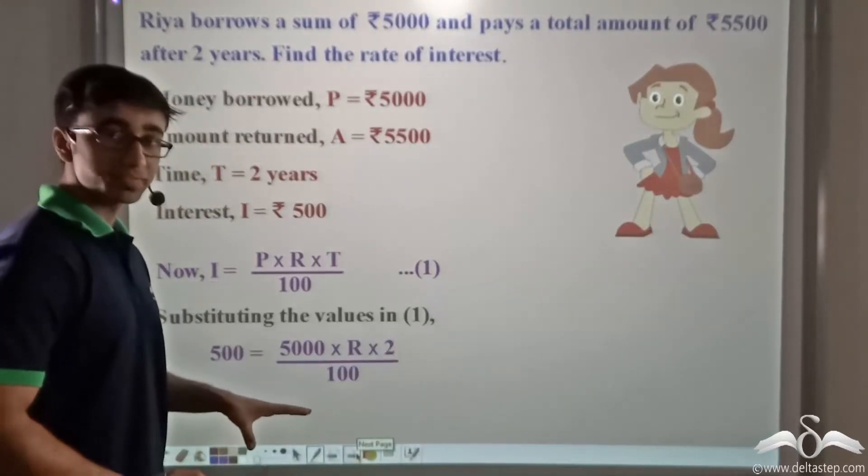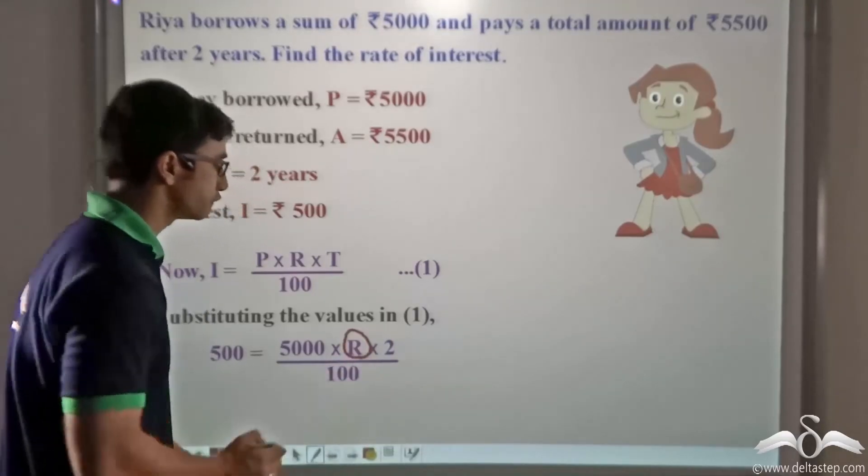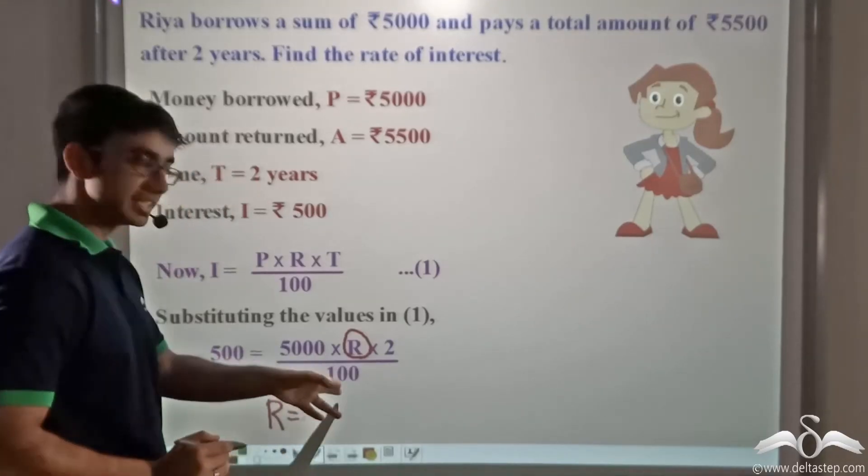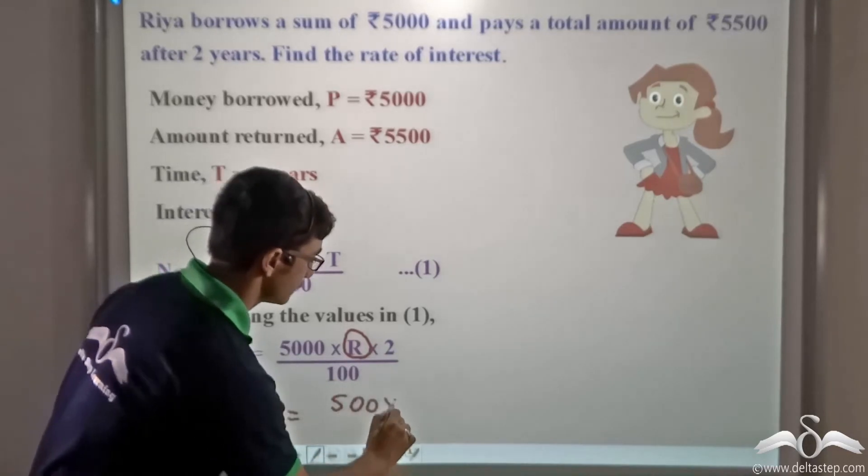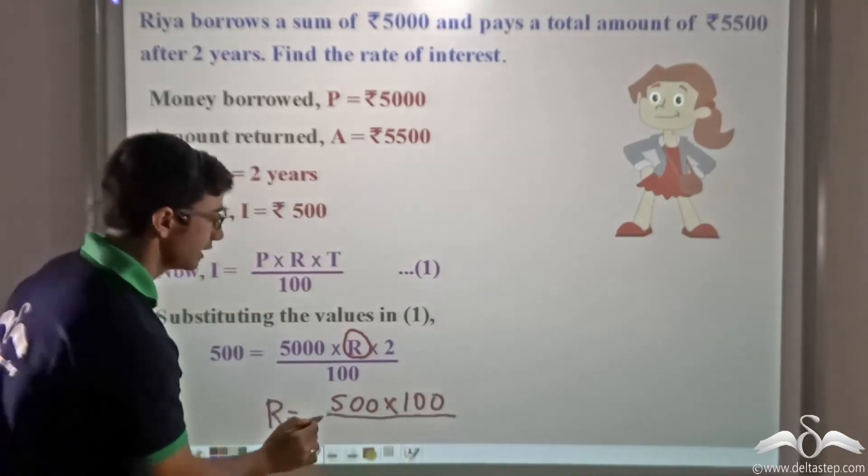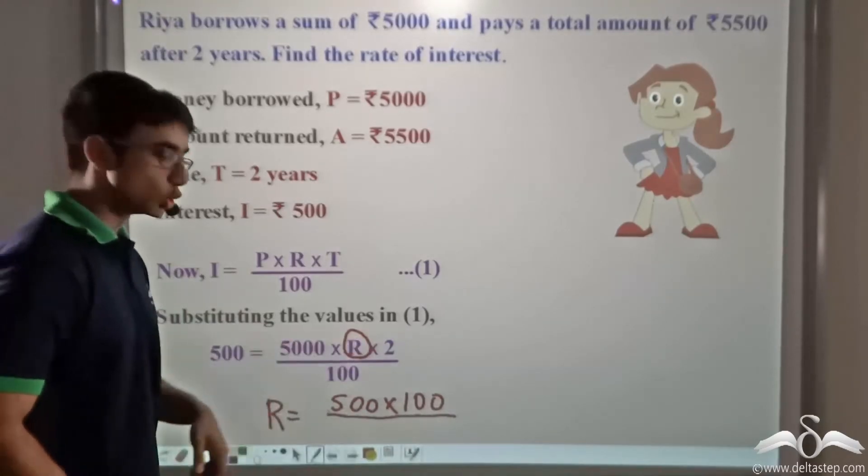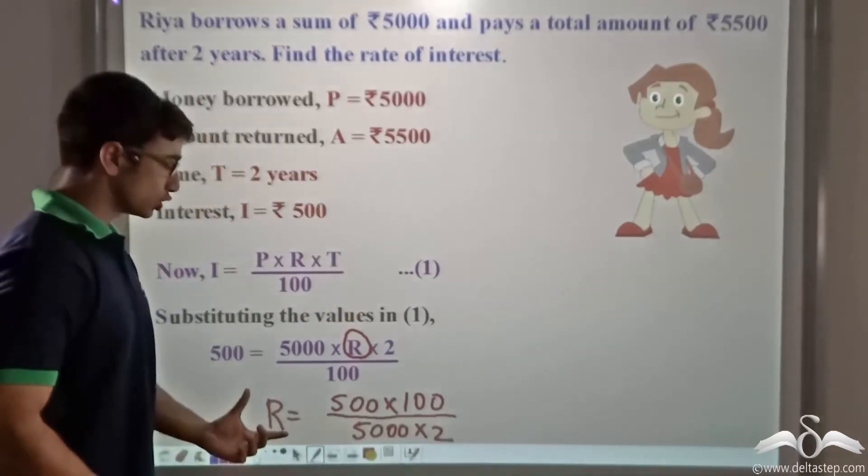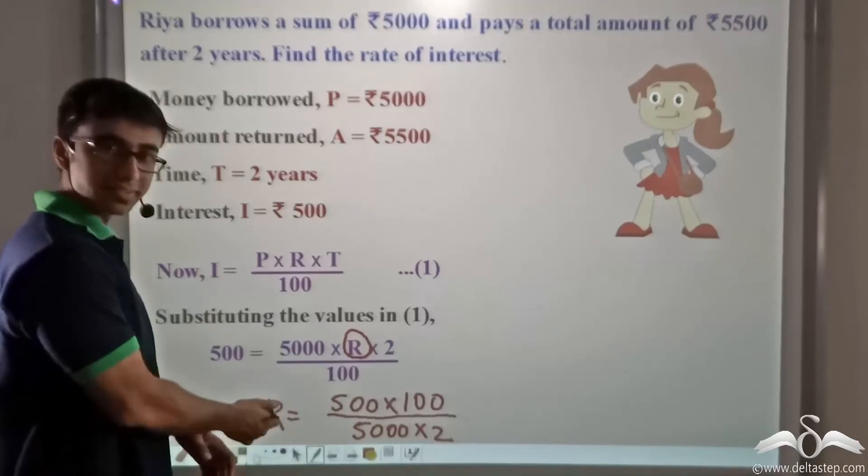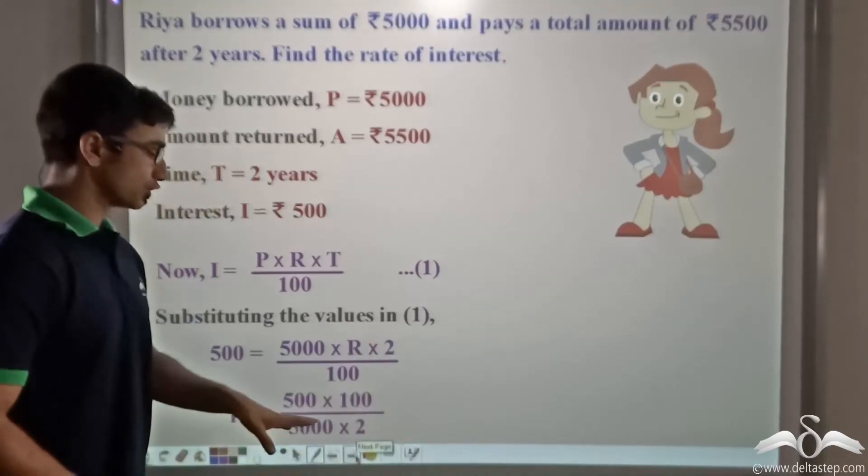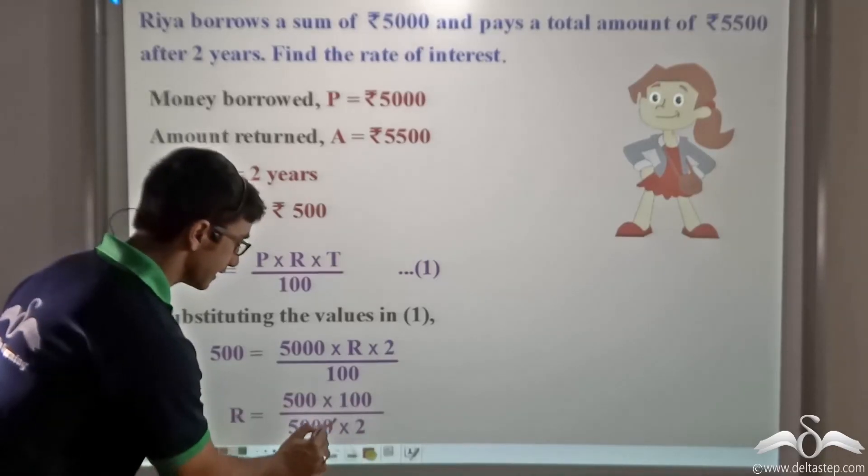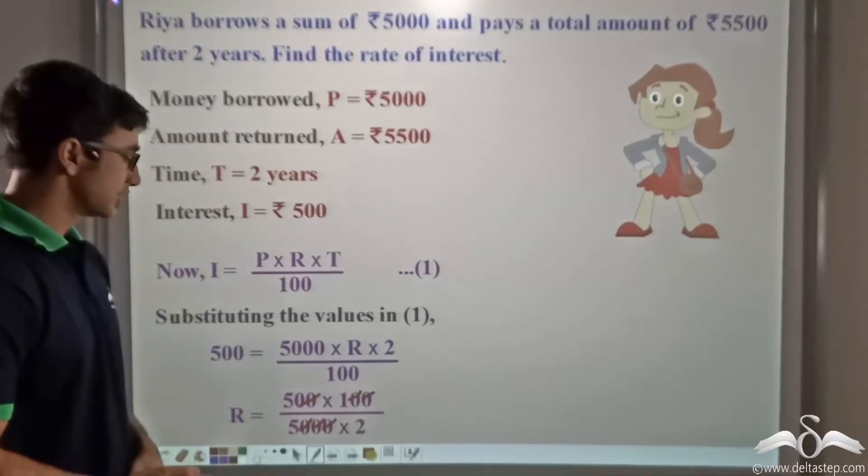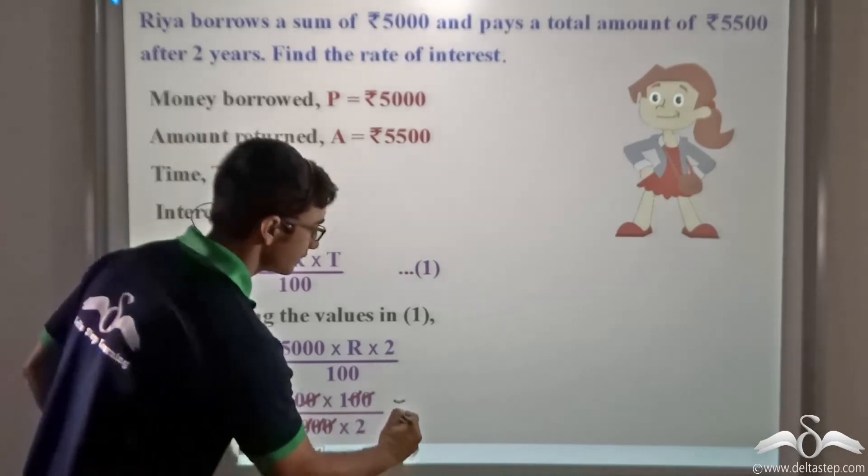Now I can further simplify this equation because the value I'm interested to find is R. So if I simply cross multiply, I will get R as 500 into 100 divided by 5000 into 2. So this is the rearranged equation for calculating the value of R. So now I can simplify this equation by cancelling three zeros from the denominator and three zeros from the numerator. So I'm left with 50 divided by 10.